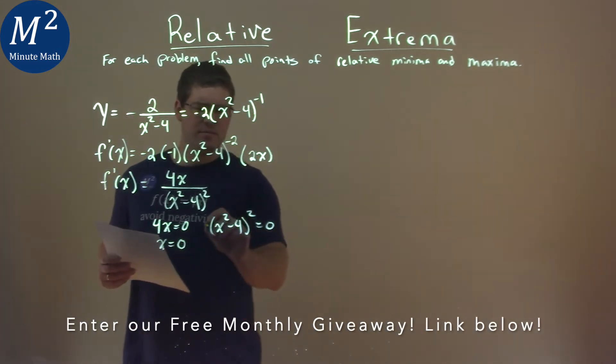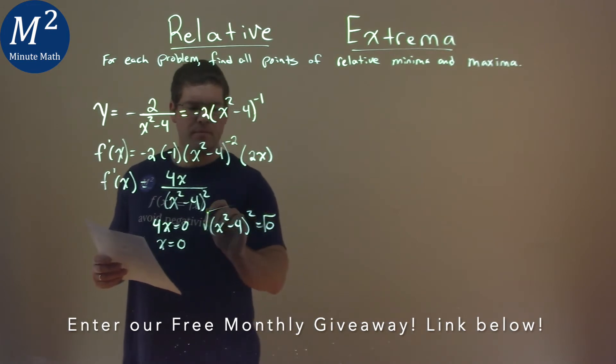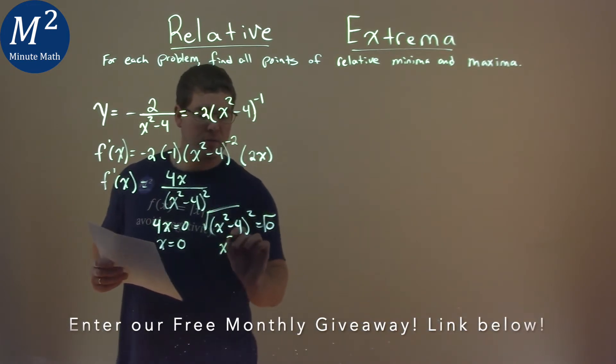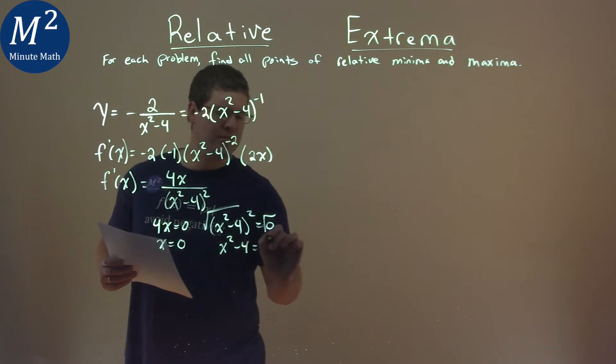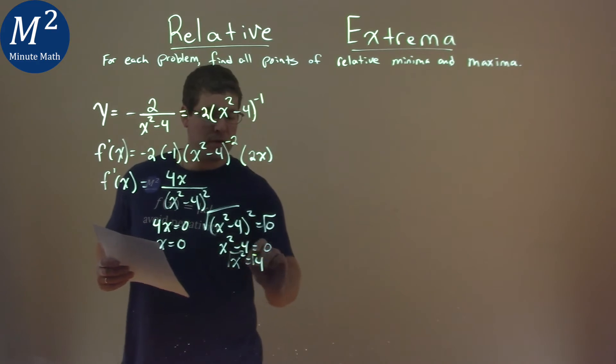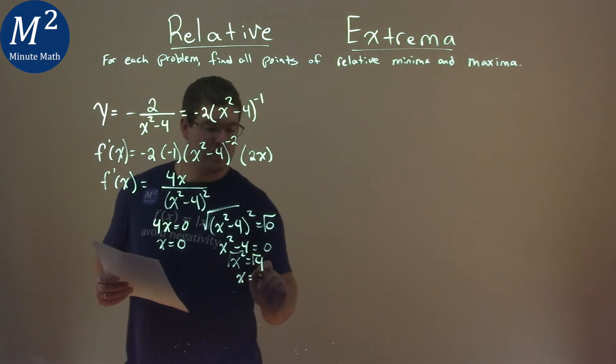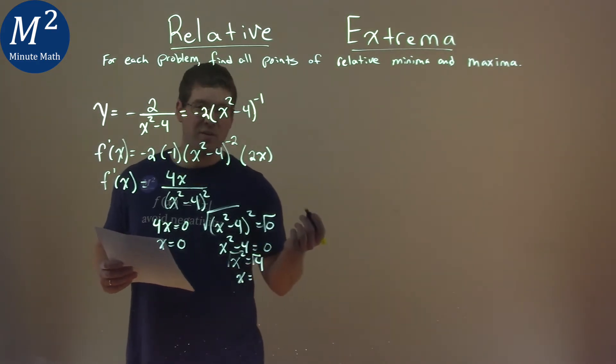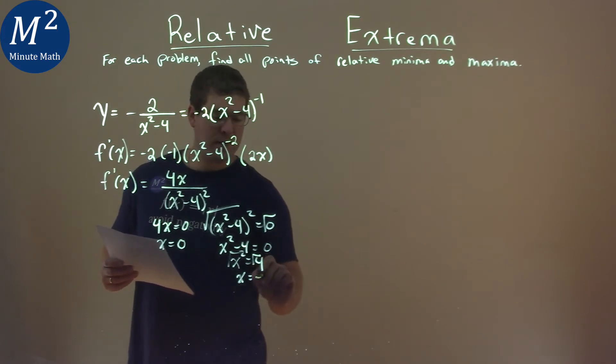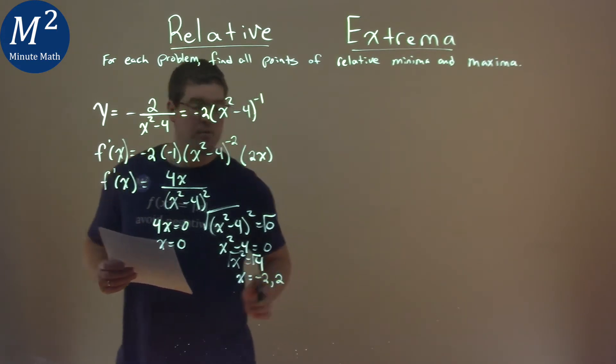Square root both sides. Well, we do that, we just have x squared minus 4 equals square root of 0 is just 0. Add 4 to both sides, x squared equals 4, square root of 4 is 2, and we have positive and negative, so negative 2 and positive 2 there.